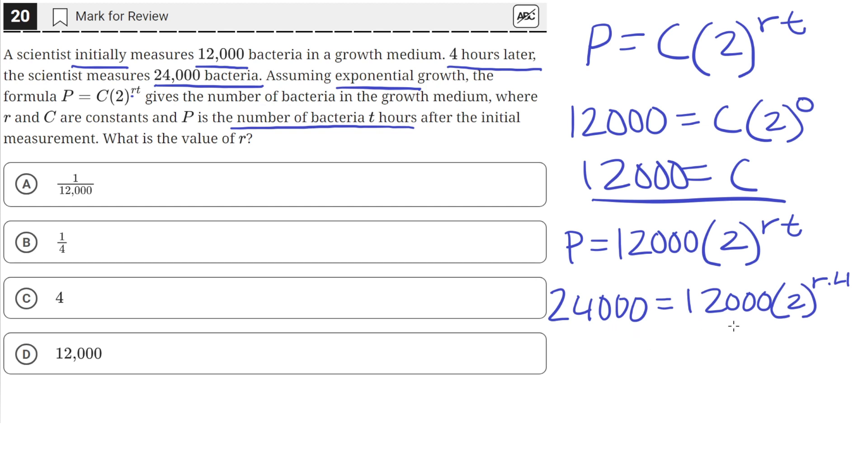Now let's divide both sides by 12,000. When we divide both sides by 12,000, we get two on this side, and we're left with two raised to the 4R.